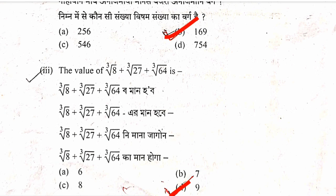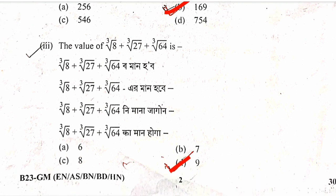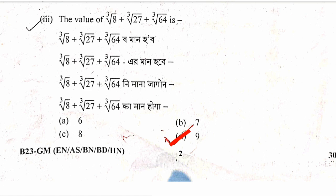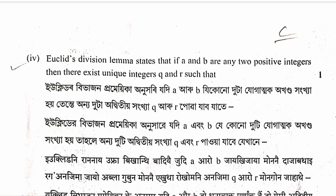Third question: The value of cube root of 8, cube root of 27, cube root of 64. Cube root of 8 is 2, cube root of 27 is 3, cube root of 64 is 4. The answer is 3.